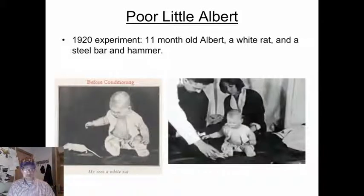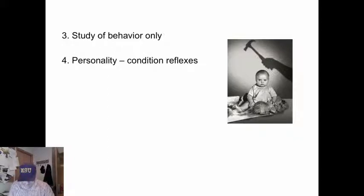Poor little Albert. By the way, to Watson, personality was just a collection of conditioned reflexes. He thought that humans inherited only three emotions: anger, fear, and love. And through classical conditioning, these three emotions and their variations became attached to stimuli or different things, people, and experiences.